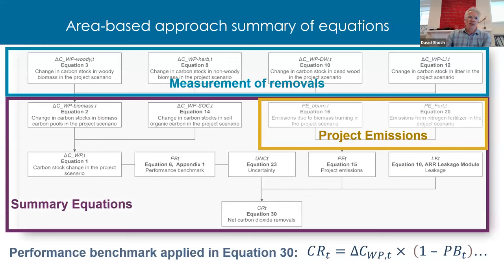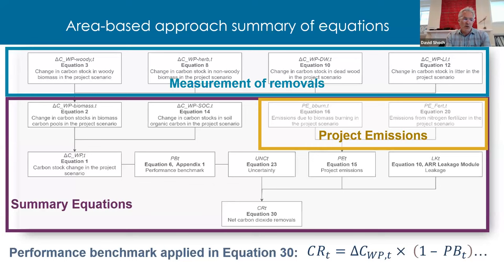Here's a brief overview of the calculation flow, which is more involved than the census-based approach as it includes more pools and sources, as well as the performance benchmark and leakage. Direct measures serve as the basis for the delta carbon term, delta CWP in equation 30, which is the final net removals calculation. Non-CO2 GHG project emissions are calculated applying IPCC default values. The performance benchmark is applied in equation 30 as: direct measures of stock change—that delta CWP term—multiplied by one minus the performance benchmark. The performance benchmark is applied as a percent deduction to those directly measured stock changes.